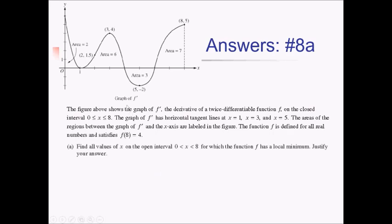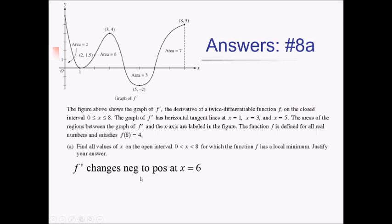For this no calculator free response, we're given the graph of f prime and we're also given that we have horizontal tangent lines at x equals 1, 3, and 5. We also have the areas between the graph of f prime and the x-axis labeled. The function f of x is defined for all real numbers and satisfies f of 8 equals 4. First part of this problem: we want to find all x values between 0 and 8 where the graph of f has a local minimum. F prime is changing from negative to positive at x equals 6. Therefore, f has a local minimum at x equals 6.